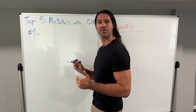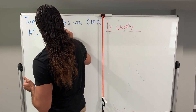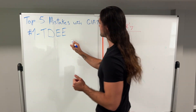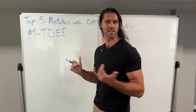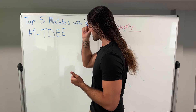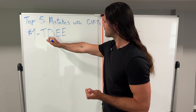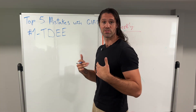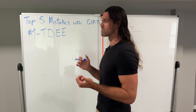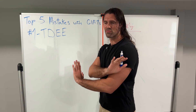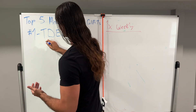Mistake number one when using GLP-1s is not calculating your metabolism. What do I mean? Knowing your TDEE — your total daily energy expenditure. When you're using the GLP-1 it's going to reduce appetite; that's its main overall effect. It's going to make you eat less and put you into some level of a deficit. But if you don't know what your starting TDEE is, you don't know what deficit you're in at all.